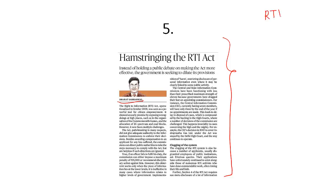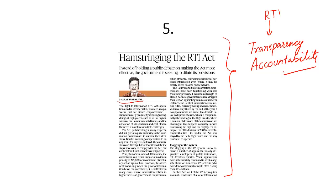Right to Information is basically about two things: transparency and enforcing accountability through that transparency. This movement started in Rajasthan, where an organization asked Rajasthan officials for data on money spent for schemes. Without that data, accountability cannot be enforced. That movement led to the enactment of the Right to Information Act in 2005.